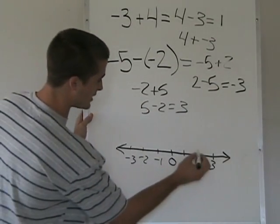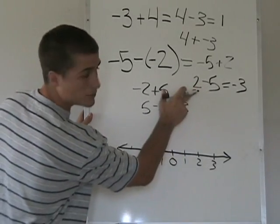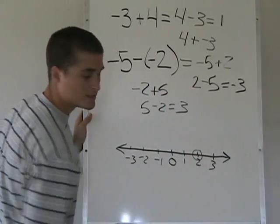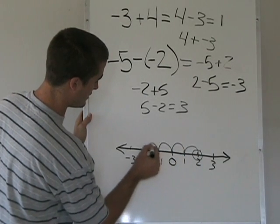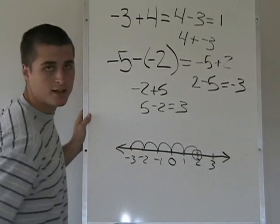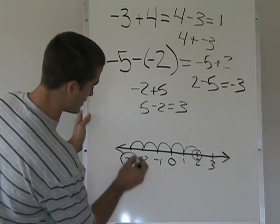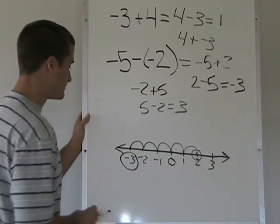Looking at it on the number line, if I start at 2 and subtract 5, I'm going to subtract 1, 2, 3, 4, 5, and I'll wind up at negative 3 right here in my answer. Thank you.